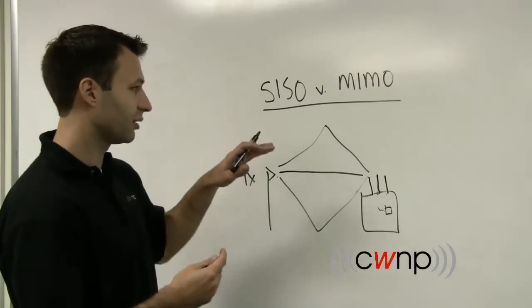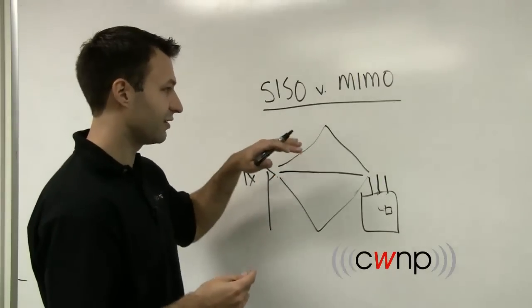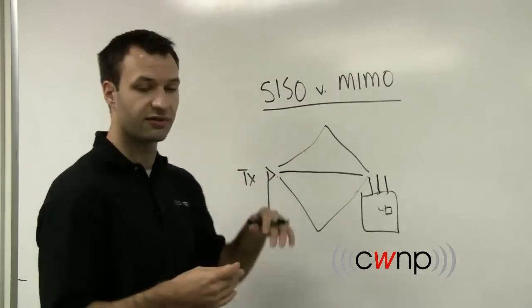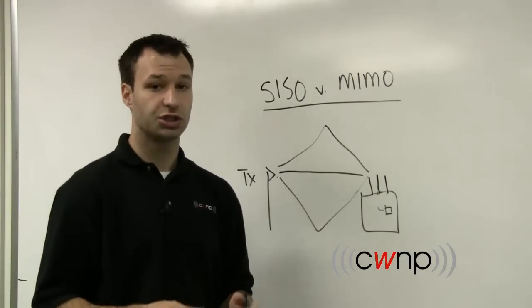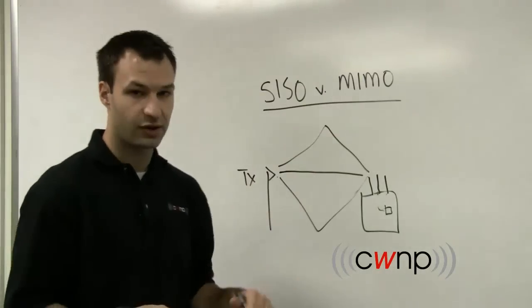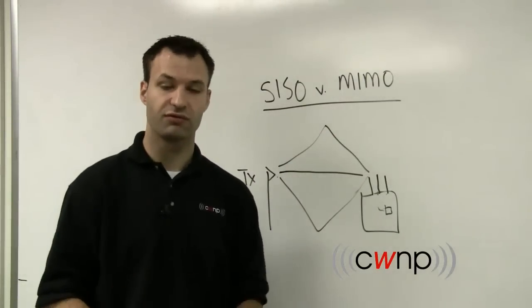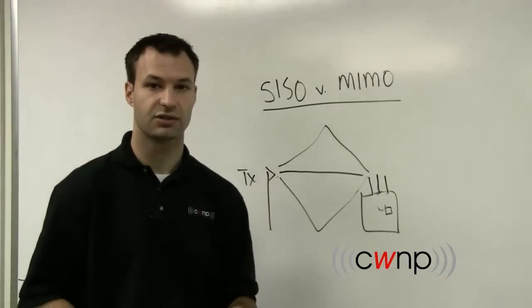So that's the difference between single input, single output. SISO is 802.11 prime, and then 802.11b, a, and g. Whereas MIMO is 802.11n, and then, of course, all future standards of Wi-Fi are going to be built on MIMO technology as well.